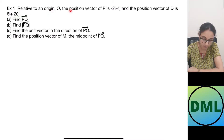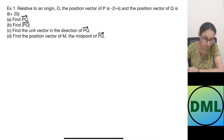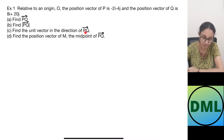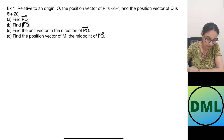Relative to an origin O, the position vector of P is minus 2i minus 4j, and the position vector of Q is 8i plus 20j. We need to: find the vector PQ, find the modulus of PQ, find the unit vector in the direction of PQ, and find the position vector of M where M is the midpoint of PQ.